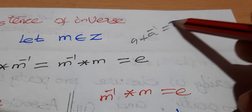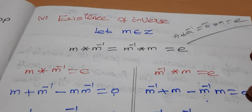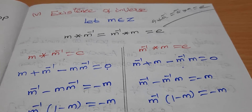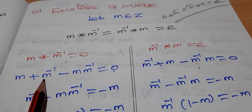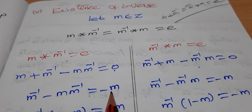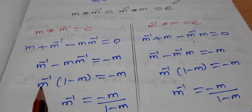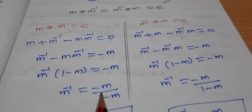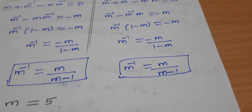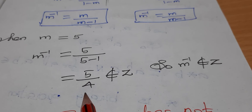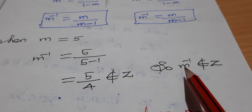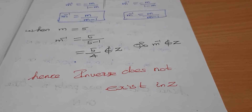Inverse property: we need a star a-inverse equals a-inverse star a equals E. So m star m-inverse equals m-inverse star m equals E, which is 0. Applying the operation: m plus m-inverse minus m times m-inverse equals 0. Solving for m-inverse gives m-inverse equals m divided by (m minus 1). For example, if m equals 5, m-inverse equals 5 over 4, which does not belong to Z. Therefore m-inverse does not belong to Z, and the inverse does not exist in Z.